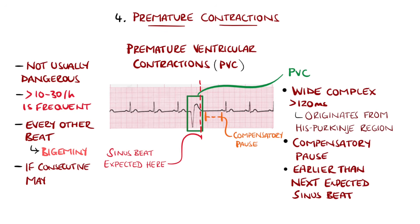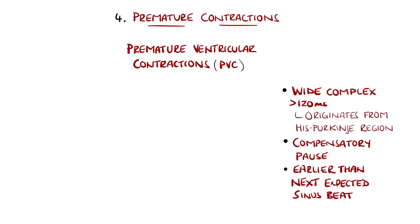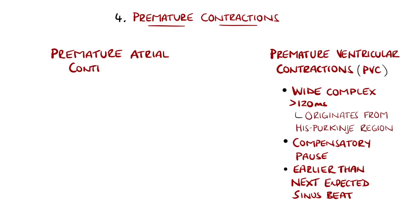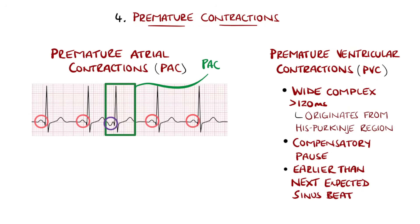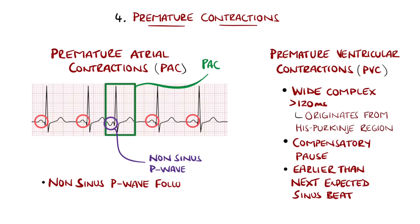A sequence of PVCs one after the other may be described as ventricular tachycardia, which we'll cover later. Premature atrial contractions, or PACs, are seen as a P wave with a different morphology to the regular sinus P waves, followed then by a narrow QRS complex. The beat following the PAC may resemble a pause; however, if you track out the expected location of the P wave, it should fall at approximately the expected time. PACs do not typically require further investigation.